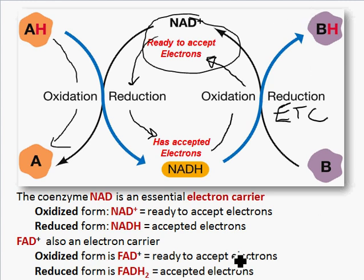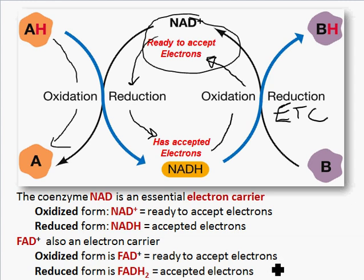So we have NAD+, which is ready to accept electrons, and it becomes NADH, which has electrons. We also have FAD+, which is ready to accept electrons, and then FADH2, which has accepted them. Remember, when they accept electrons they're reduced — reduction is gain of electrons.